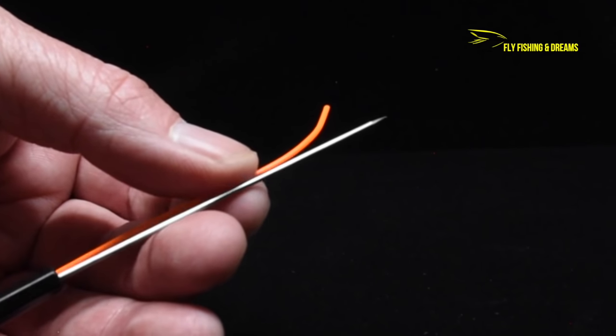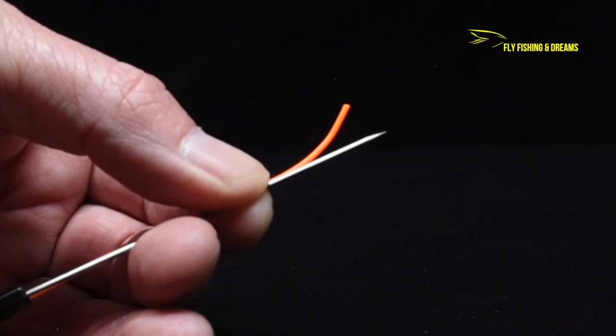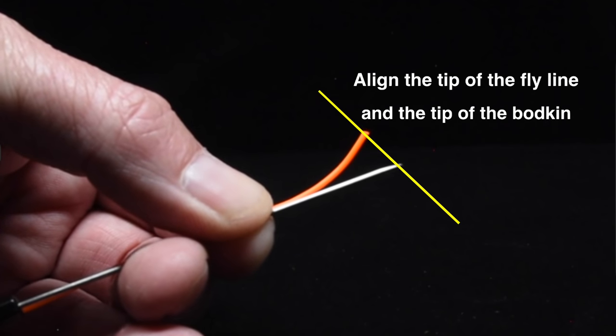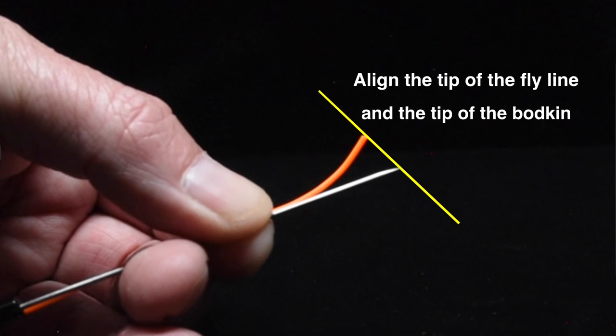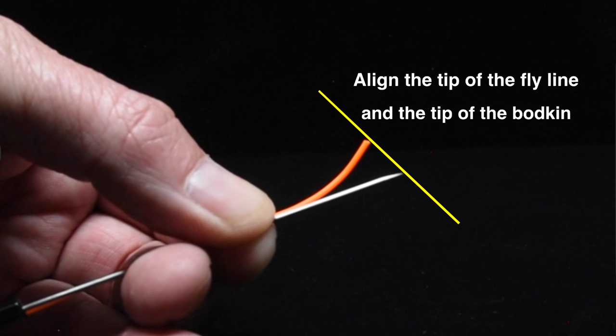Begin with the end of the fly line and the bodkin needle in your left hand. Be sure the end of the fly line and the end of the bodkin needle are aligned at about the same length.